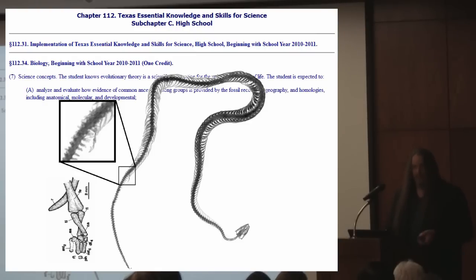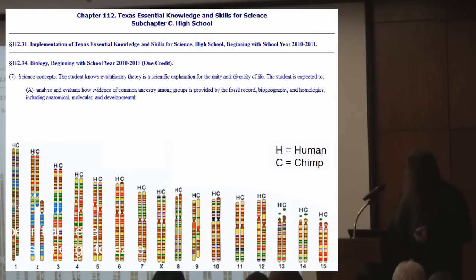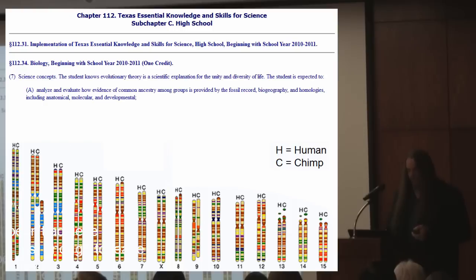Did you know snakes had legs? They still can't talk though. Of course, there are homologies in genetics too. Just look at this illustrated depiction of homology found between the human and chimpanzee genome. Notice the second set has two chimp chromosomes paired to just one of ours.